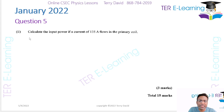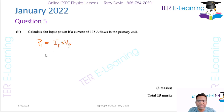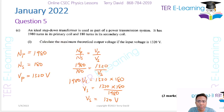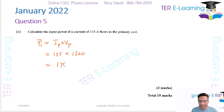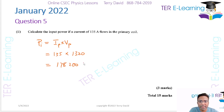The next part asks us to calculate the input power if a current of 135 amps flows in the primary. Input power Pi = Ip × Vp = 135 × 1320 = 178,200 watts.